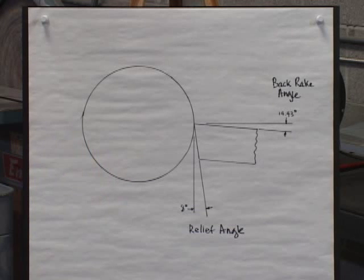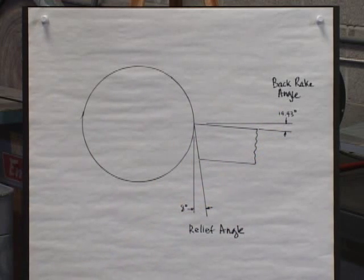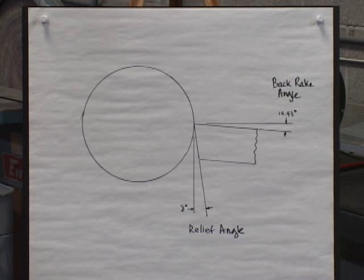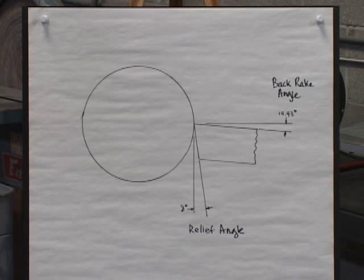The back rake angle is 14.43 degrees. There's nothing magical about that particular number — 14 or 15 degrees would probably perform very similarly. The particular rake angle derives from the fact that the total inclination of the rake surface is 20 degrees from horizontal. The side rake and back rake then both turn out to be about 14.43 degrees.